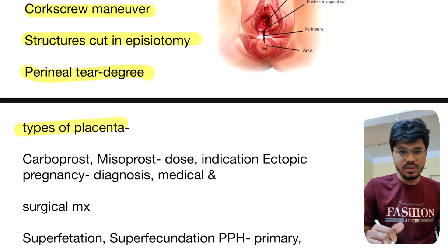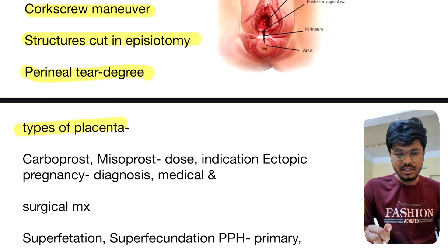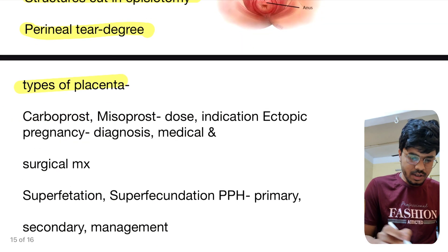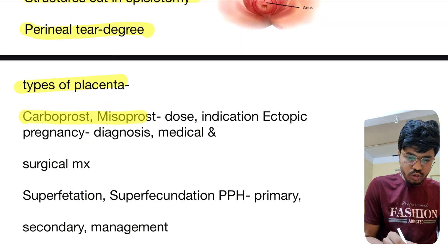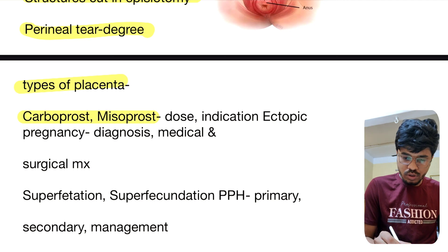Types of placenta — succenturiata, bilobata, etc. Carboprost, misoprostol — dose and indication.